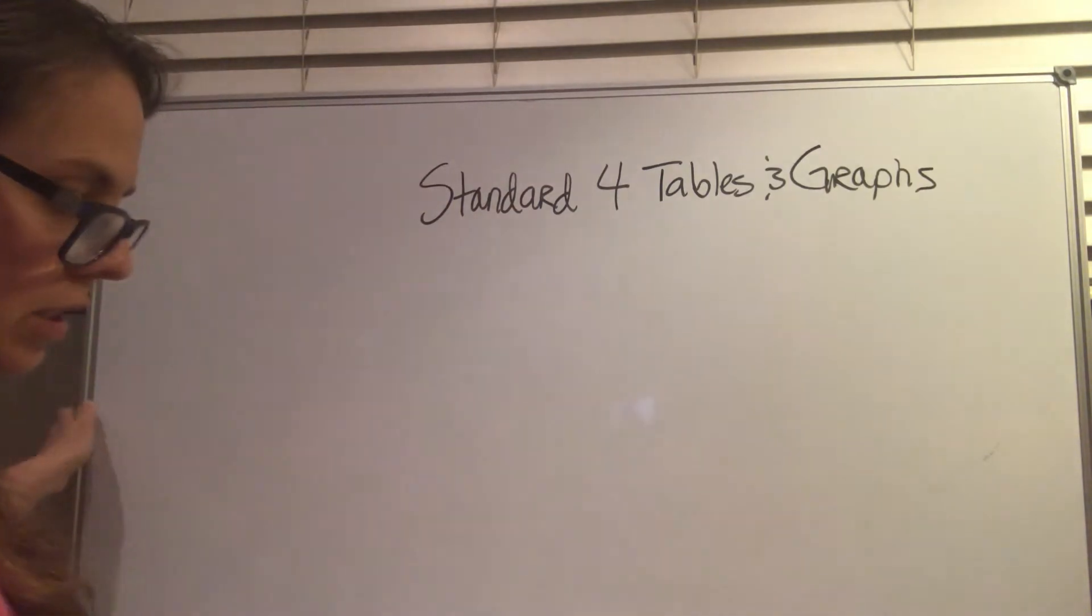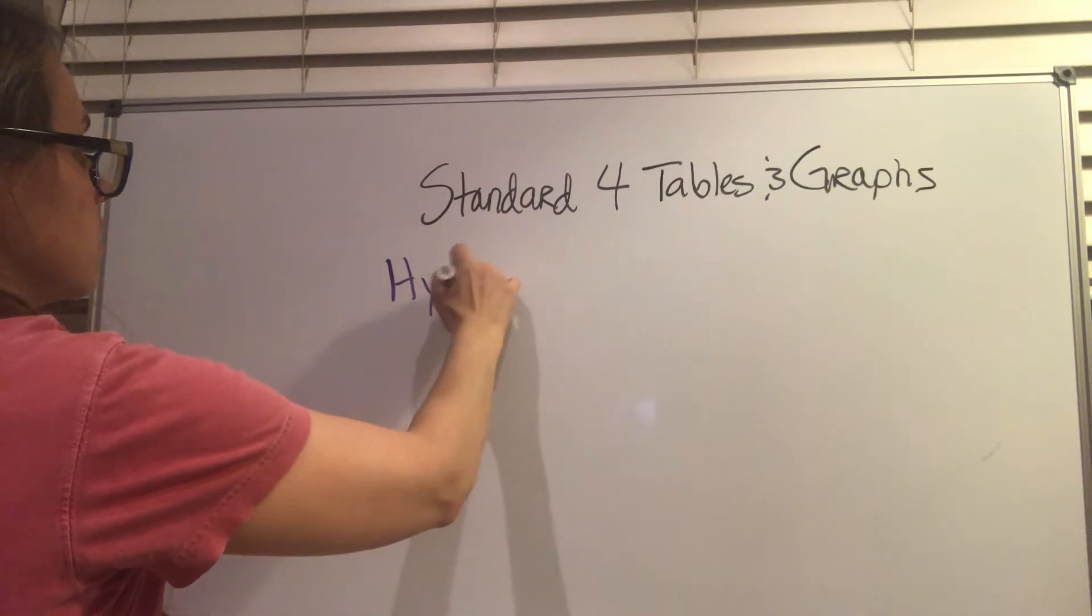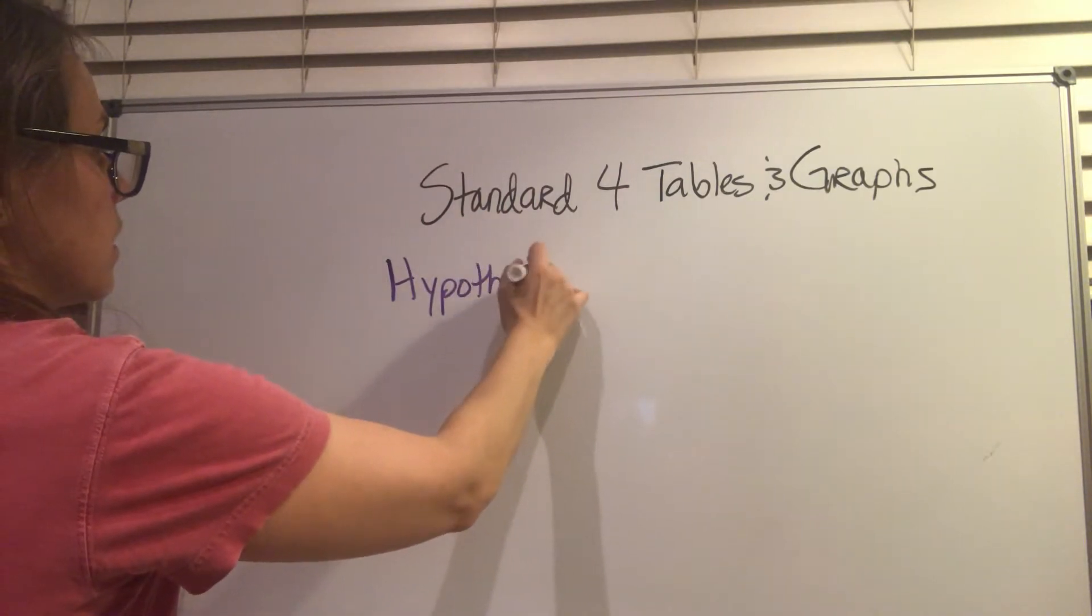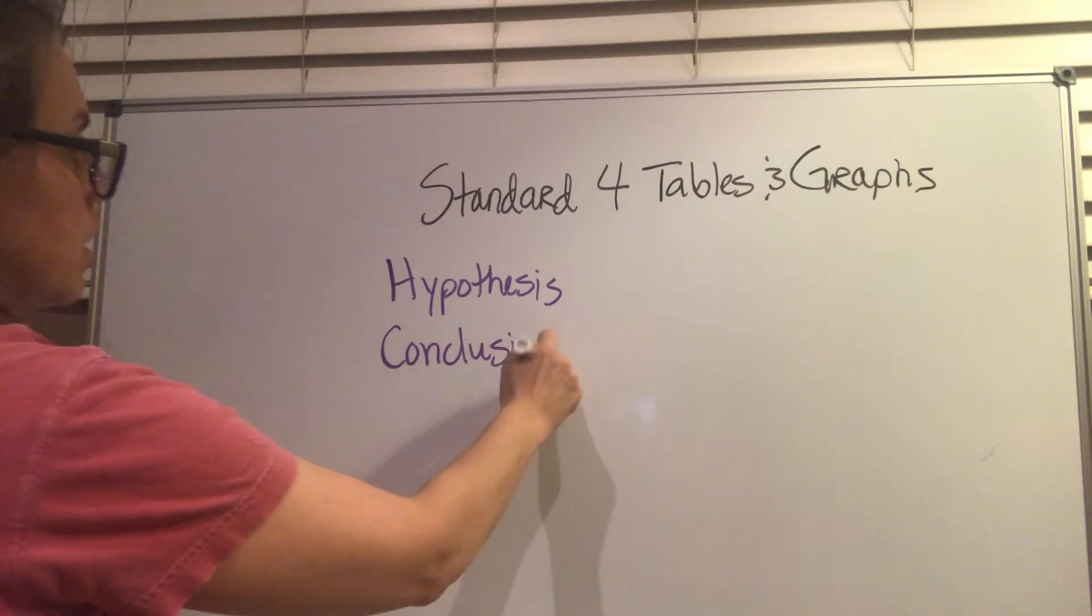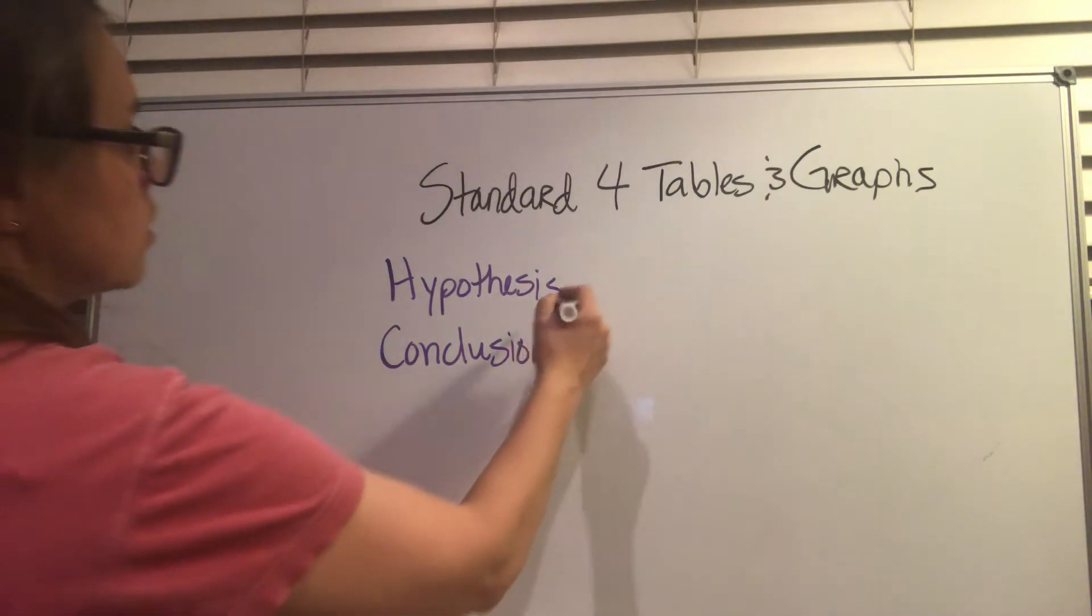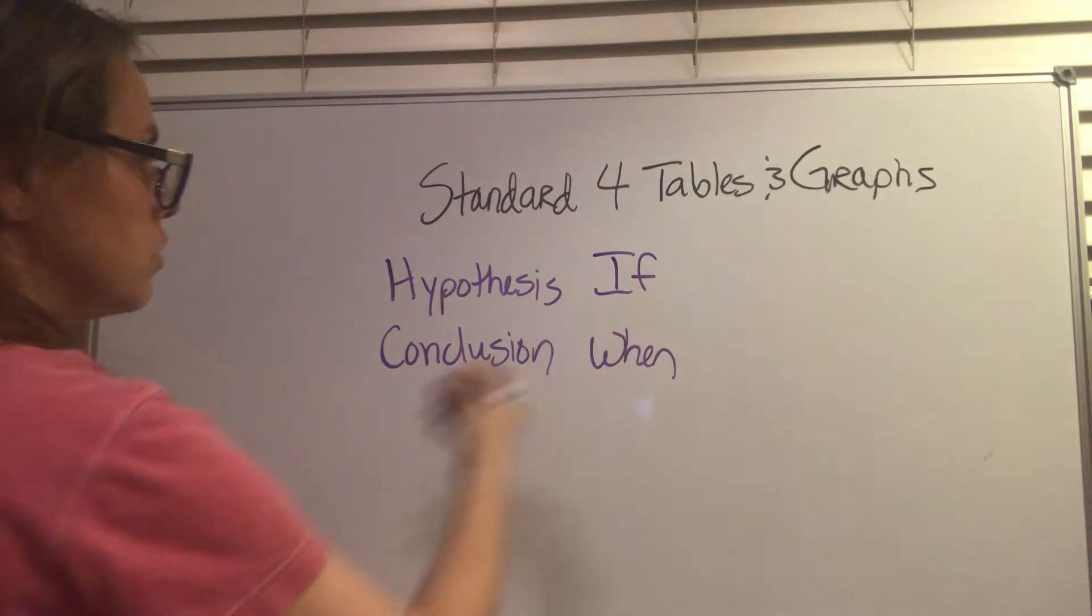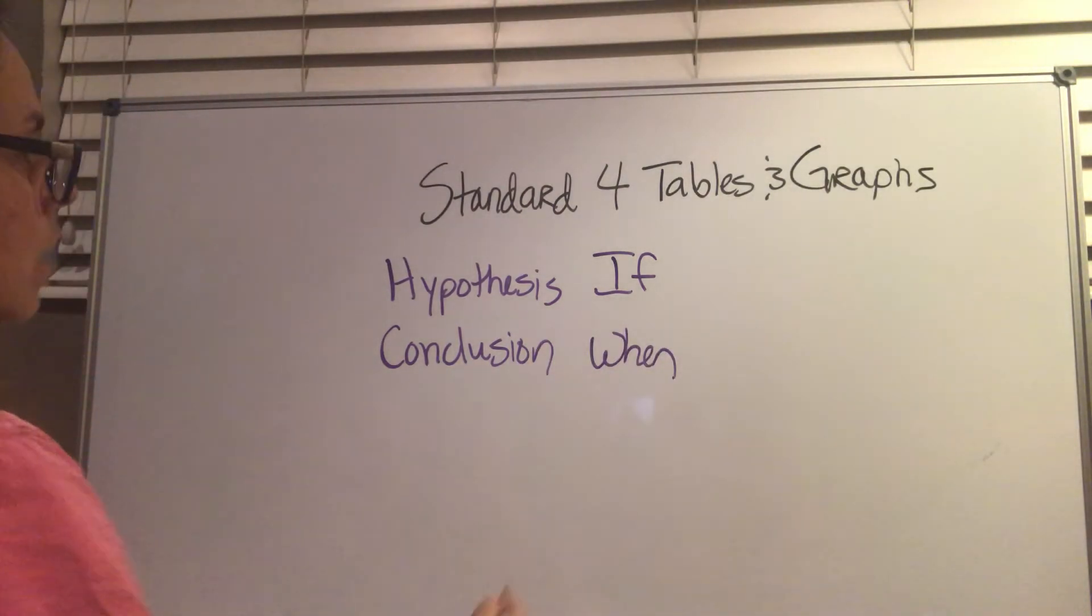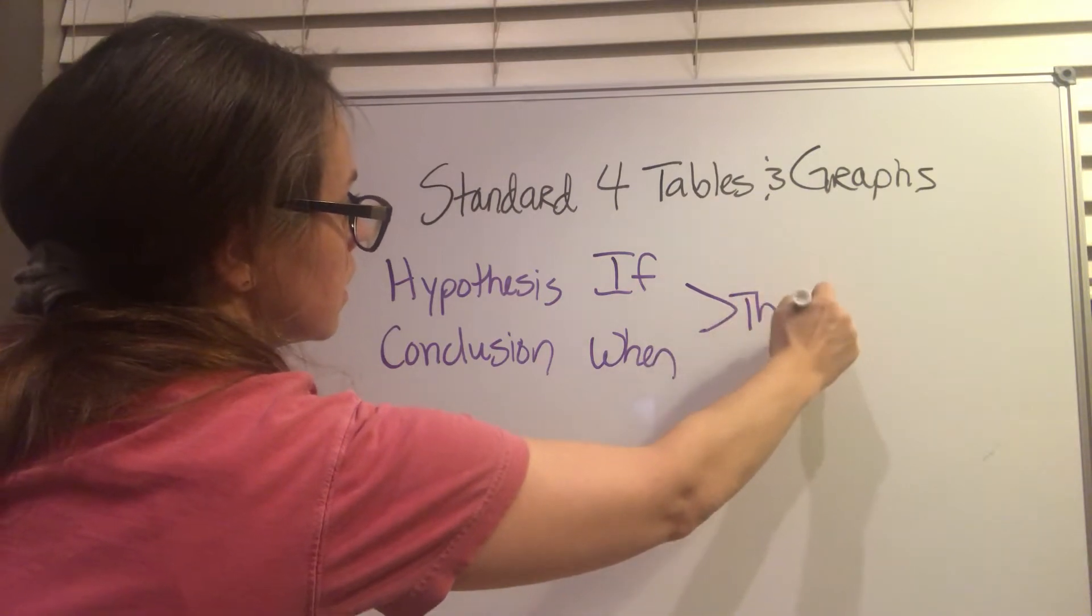Also, in this standard, you need to understand hypothesis and conclusions. A lot of you, I don't know what's up, but you don't get to the conclusion. That's like one of the most important parts of experiment, and you need to take time to do that. So when you do a hypothesis, you start with if. When you do a conclusion, you start with when. And then both of them, you go to then, and then because.